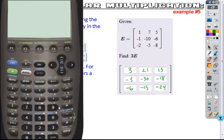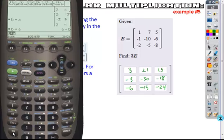If you are going to do this on your calculator, so once again the same process holds true, you could either specifically take 3 times and then type in your matrix. So bracket then 1, 7, 5, semicolon jumps to the new row, negative 1, negative 10, negative 6, semicolon to jump to the new row, negative 2, negative 5, negative 8.